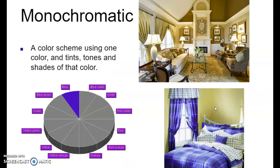Here we have our first color scheme: monochromatic. Mono meaning one, chromatic meaning color — so one color. It's a color scheme using one color and the tints, tones, and shades of that color. On your color wheels next to monochromatic on your sheet, you can color in one of the triangles — for example, blue or green — just pick one color, and that will represent how it's one color.